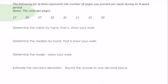Well, the mean is also called the average. So what I would want to do is I'd want to add up all of my pages. So I have 17 plus 20 plus 27 plus 22 plus 31 plus 11 plus 21 plus 20, out of how many times, how many different pieces of data do I have? 1, 2, 3, 4, 5, 6, 7, 8. And if I add that all up, I find an average of 21.125 pages.